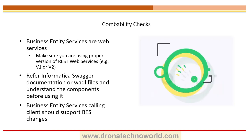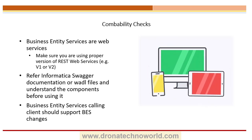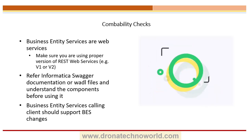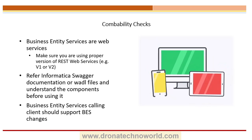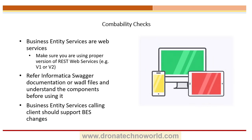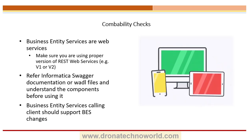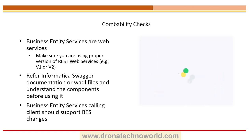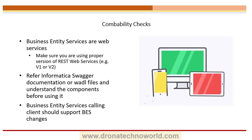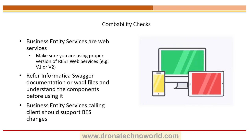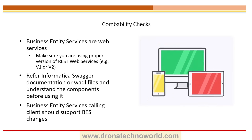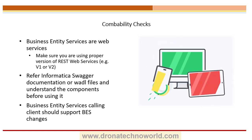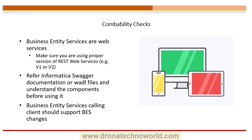Where can you check that? First, you have the Swagger documentation provided by Informatica — you can check there what version they are using. If you are using earlier versions like 10.3 or 10.4, you get WADL files. Check the versions in those WADL files and understand the various components that come as part of those web services.